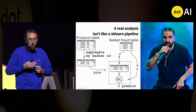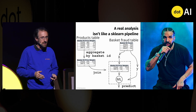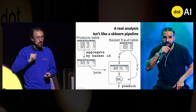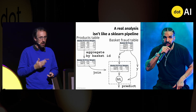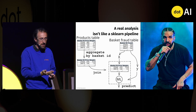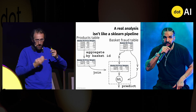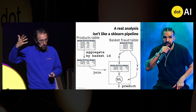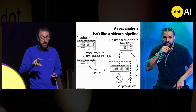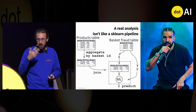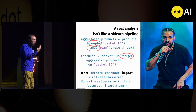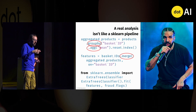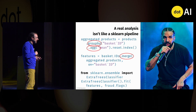A real analysis doesn't fit in a scikit-learn pipeline. A real analysis typically starts from multiple tables — for instance, a product table and a basket table. You might need to aggregate the product table to summarize all products in a given basket, then merge it via a join to the other table. Only then do you have a feature table on which you can apply a machine learning pipeline. This is done via Pandas, Polars, or SQL code with group-bys, aggregates, and merges — which doesn't fit in a scikit-learn pipeline.